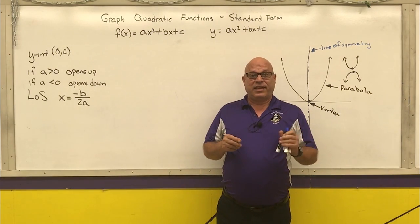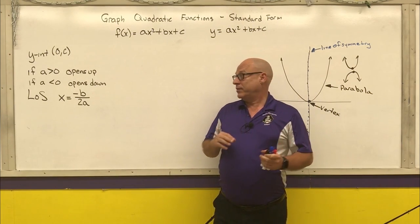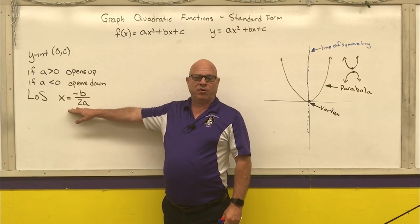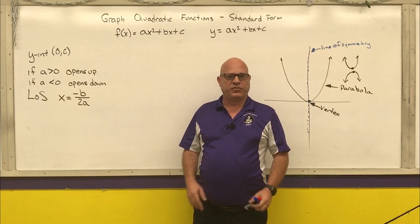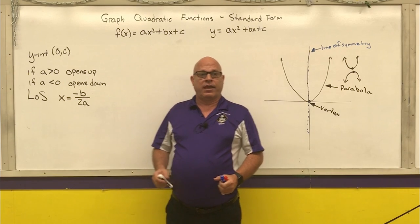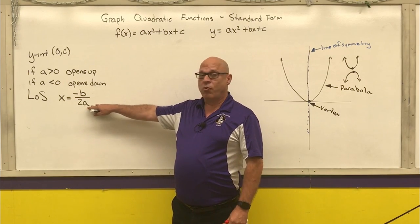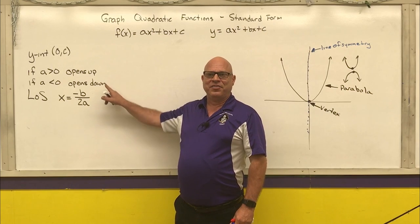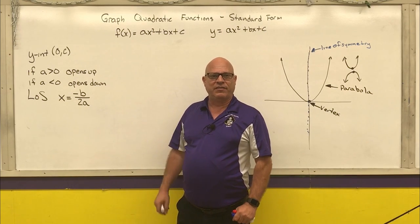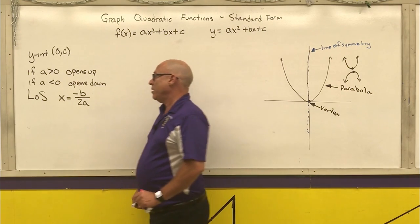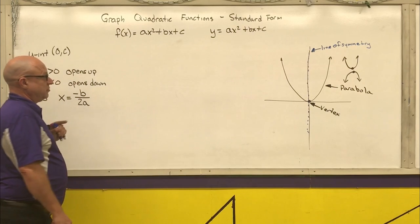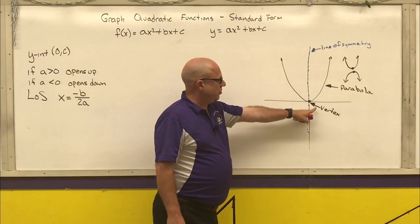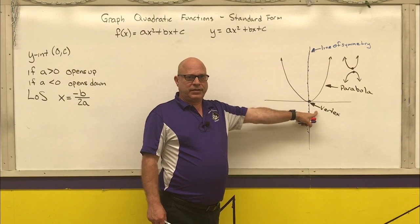Right now, just take that as a fact. If you ever take calculus, you'll be able to derive where negative b over 2a comes from. Later on, for some of the quadratic topics, you'll see parts that get us closer to where that comes from. That is the equation for the line of symmetry, and it is also the x-coordinate of the vertex.